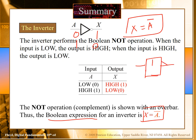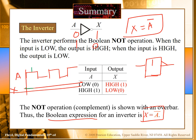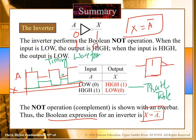The inverter is also represented using a rectangular outline in some books. If I have a waveform as the input and I want to draw the output, the output will just be the inverse: if it is high the output will be low, if it is low the output will be high. This is the timing waveform and this is the truth table of the inverter gate.